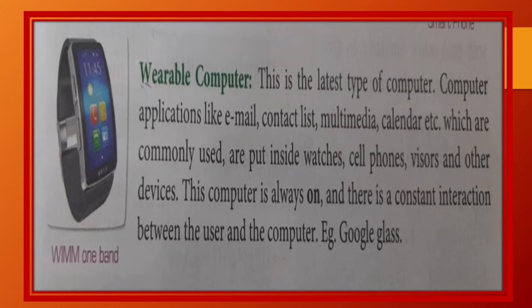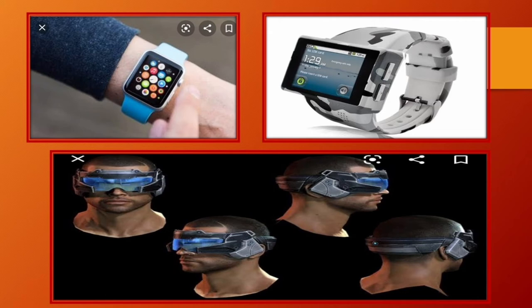Wearable computer. This is the latest type of computer. Computer applications like email, contact list, multimedia, calendar, etc., which are commonly used are put inside watches, cell phones and other devices. Means, is tarah ke computer ko hum watch ya phone ke andar wear karte hain. Is mein hum apni emails contact list ko check kar sakte hain.